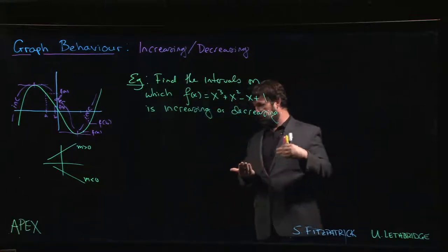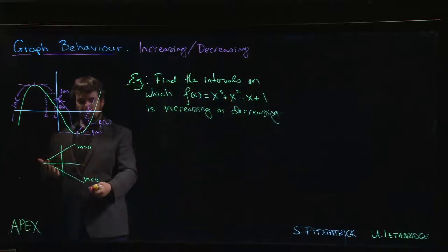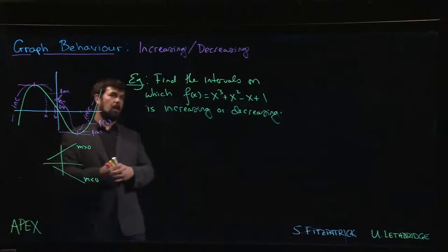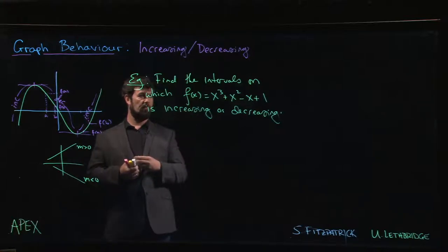Using the Mean Value Theorem, we tie these properties into whether the derivative is positive or negative. Do you have a positive slope, in which case you're dealing with an increasing function, or a negative slope, in which case you're dealing with a decreasing function?